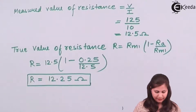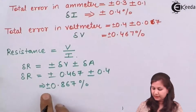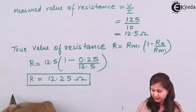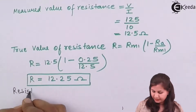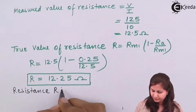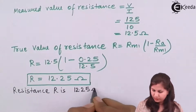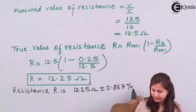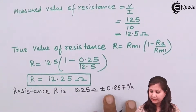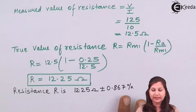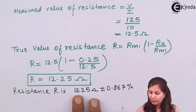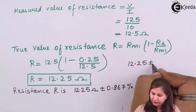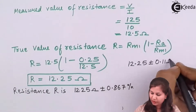The error in the resistance is plus minus 0.867 percent. So when we specify the value of resistance, R equals 12.25 ohms plus minus 0.867 percent. This 0.867 percent is a percentage of 12.25 ohms, so when we calculate it, it comes out to be 0.11 ohms. Therefore R equals 12.25 plus minus 0.11 ohms.